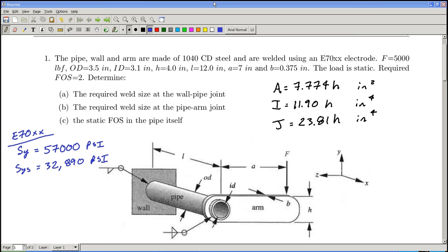This problem sees essentially a lever arm welded to a pipe which is then welded firmly to a wall. You're asked to analyze three things: the weld size required at the wall, the weld size required between the pipe and the arm, and then the static factor of safety of the pipe itself.